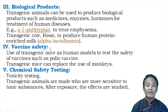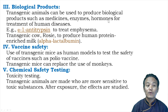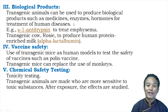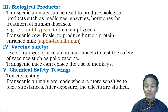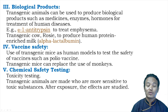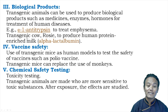The third use of transgenic animals is for obtaining biological products such as medicines, enzymes, and hormones for the treatment of human diseases. For example, alpha-1 antitrypsin can be obtained from transgenic animals and used to treat emphysema, a pulmonary disease in which the alveoli of the lungs get damaged.